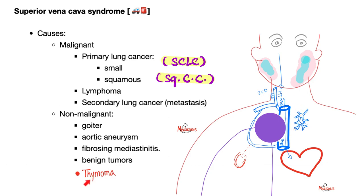Don't forget that thymoma is associated with myasthenia gravis, which causes muscle weakness that gets worse on repetitive activity. Conversely, small cell lung cancer is associated with Lambert-Eaton Myasthenic Syndrome, which causes muscle weakness that gets better on repetitive movement.